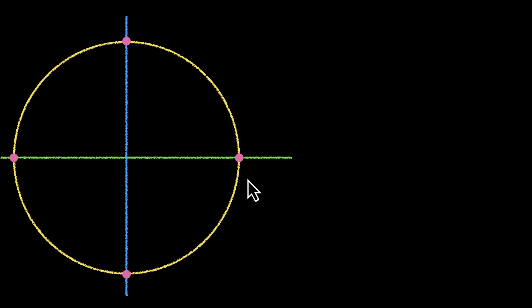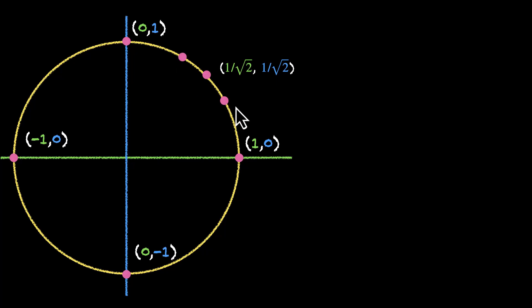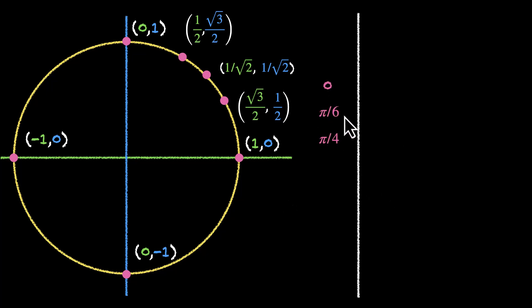Let's bring everything together. In this video, we have figured out some important points: coordinates 1, 0; 0, 1; minus 1, 0; and 0, minus 1. We also figured out three more points. The one right in the middle is pi by 4, with coordinates 1 by root 2 and 1 by root 2. We have two more angles, 30 and 60: pi by 6 has coordinates root 3 by 2 comma 1/2, and pi by 3 has coordinates 1/2 comma root 3 by 2. Now that we have all the points and their coordinates, let's make the table. We have angles 0, pi by 6, pi by 4, pi by 3, pi by 2, pi, 3 pi by 2, and 2 pi.